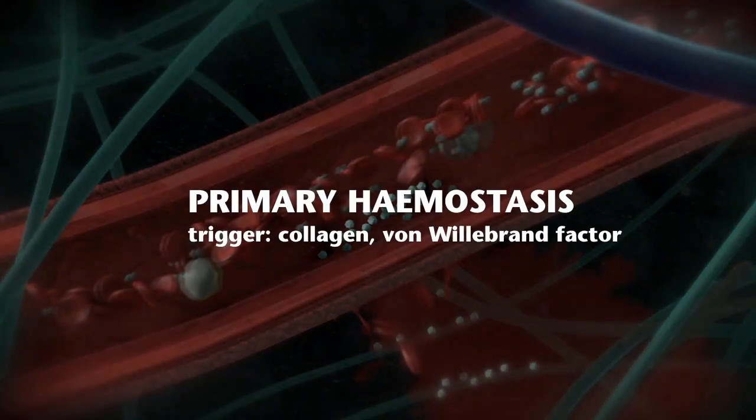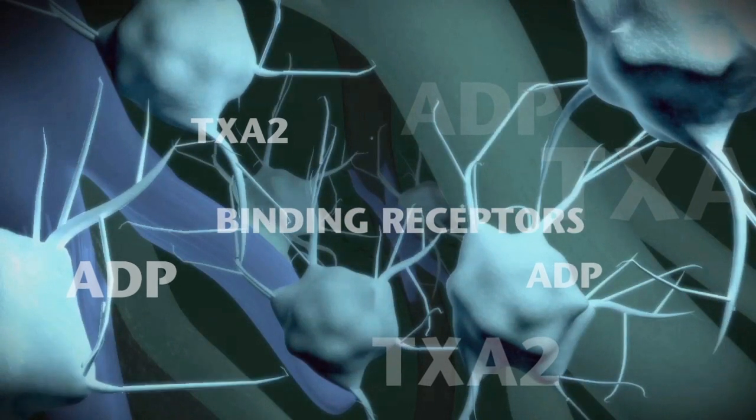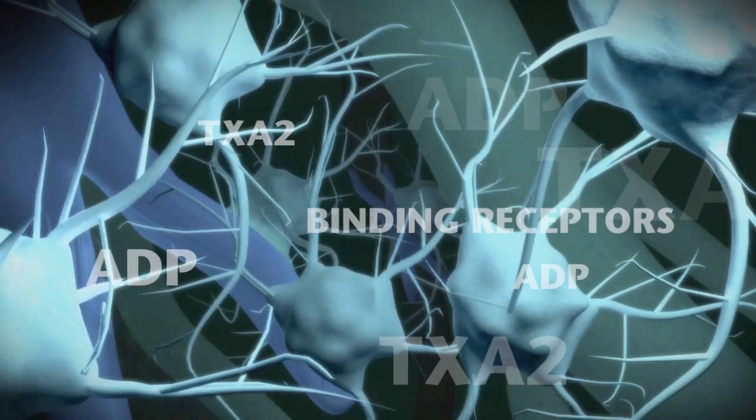Collagen activates platelets, causing them to change shape and to activate binding receptors on their surface. Released compounds like thromboxane A2 and ADP recruit and aggregate more platelets.